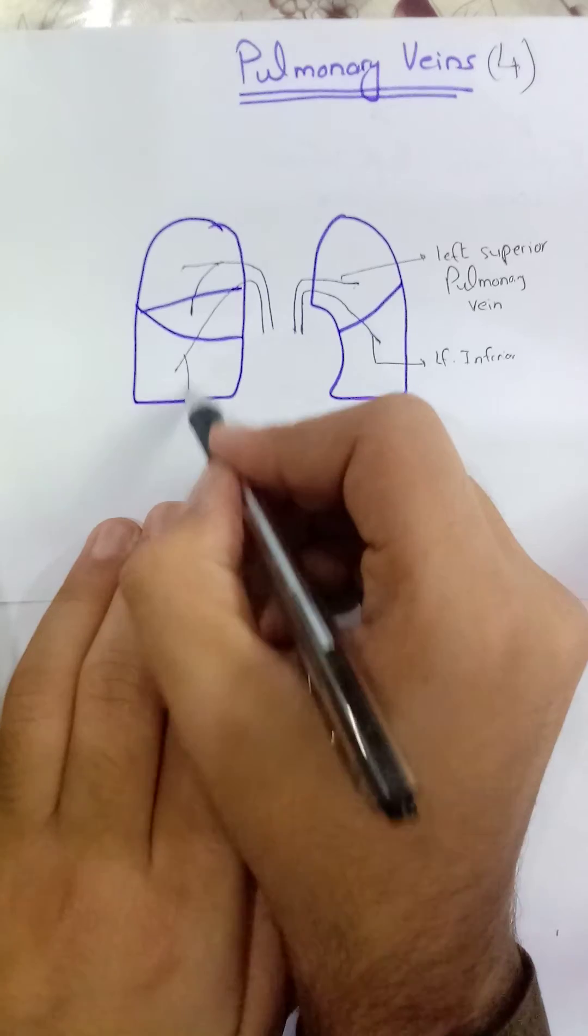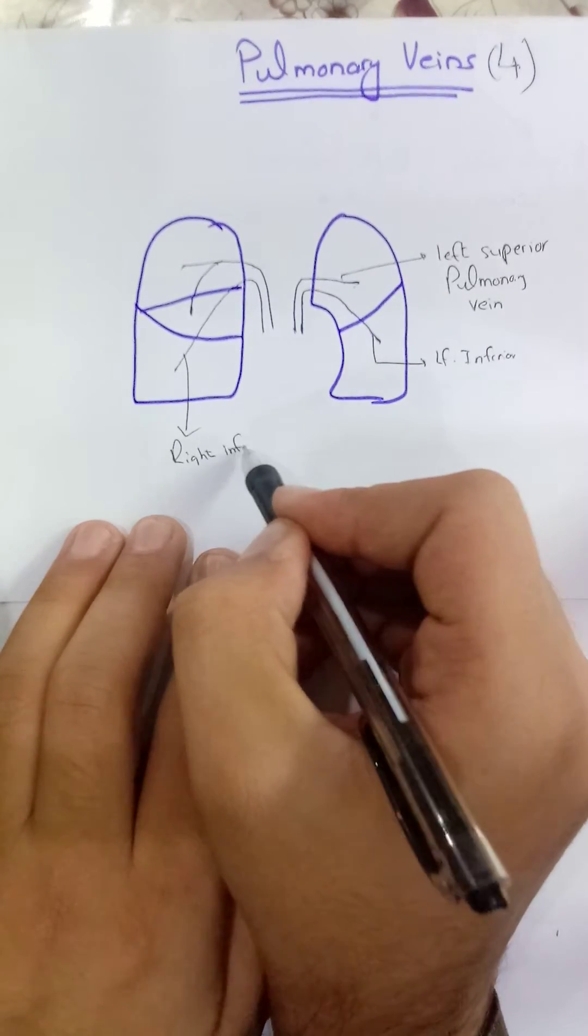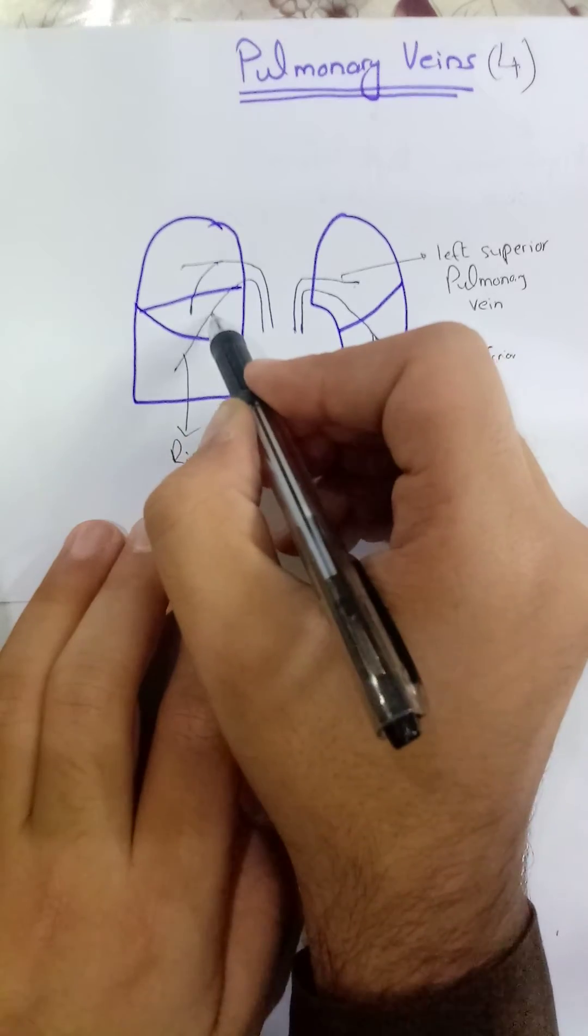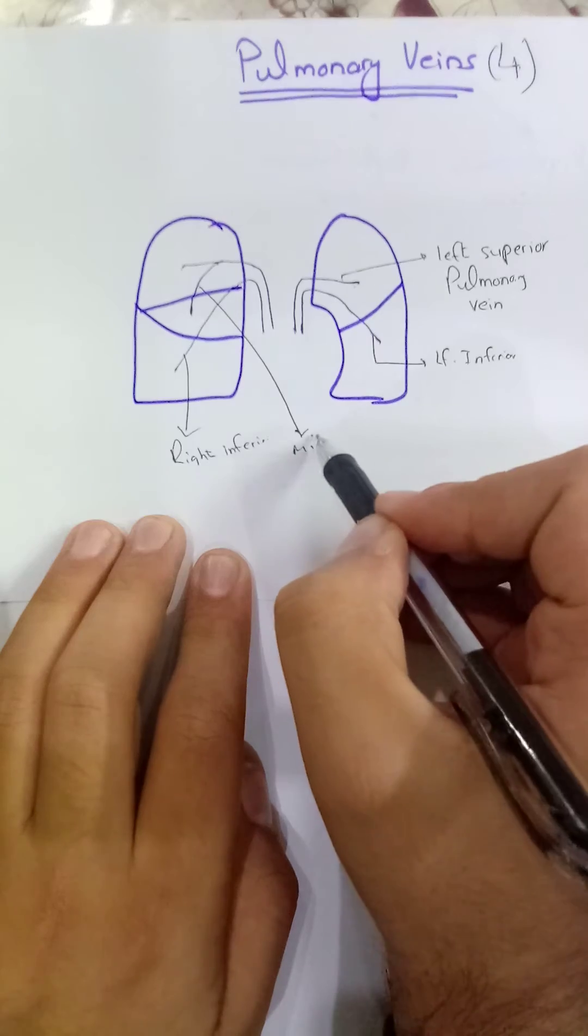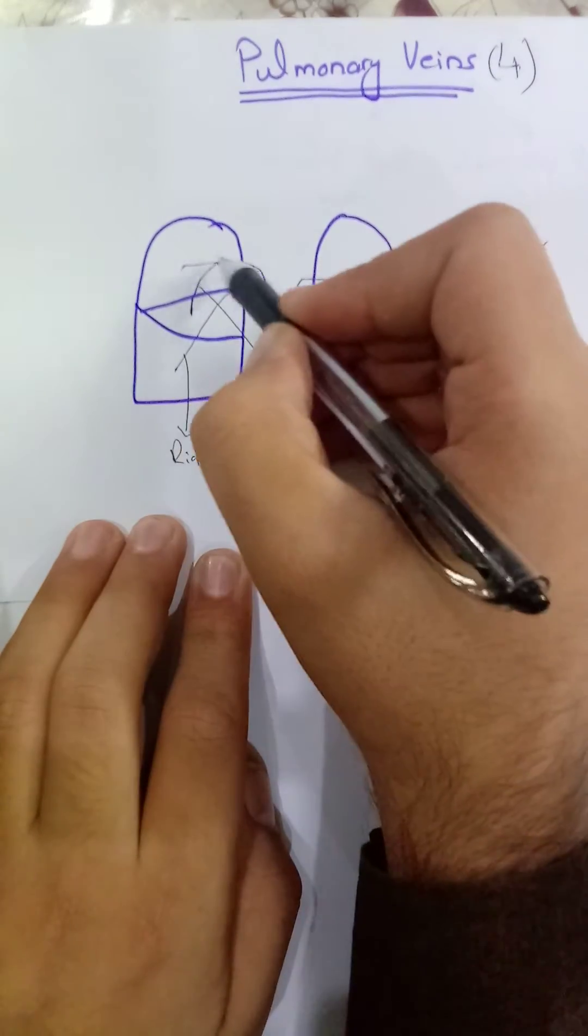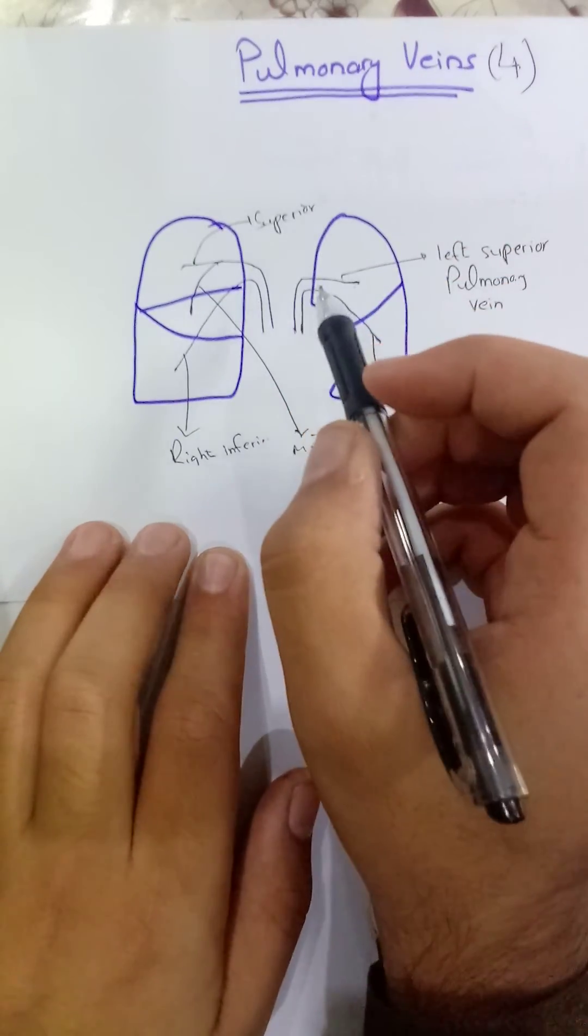Similarly, this will be right inferior pulmonary vein, this will be middle, and this will be right superior pulmonary vein.